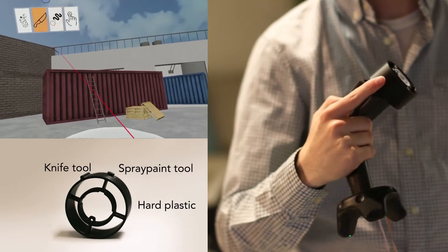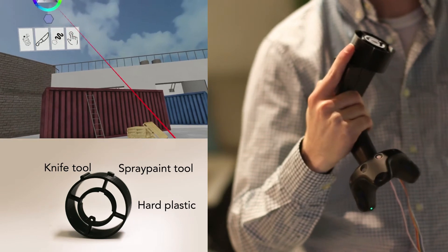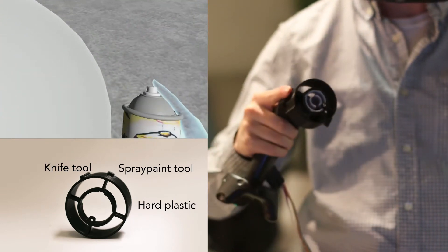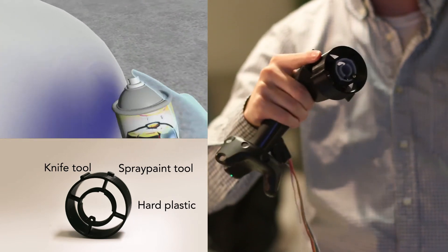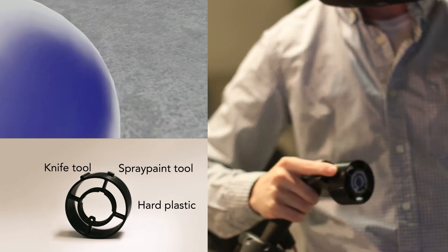By sensing the force the finger exerts on the wheel, we turn passive elements into interactive tools. Here we show how a simple plastic nub can be used as the tip of a can of spray paint.